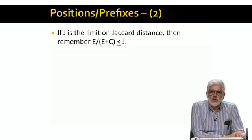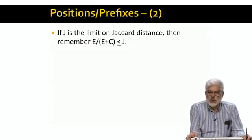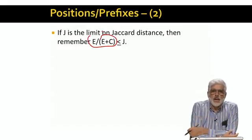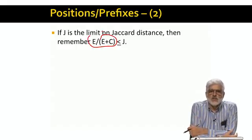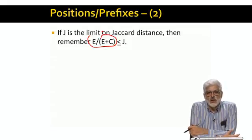Remember, we observed earlier that the Jaccard distance of two strings can be expressed as E over E plus C, where E is the edit distance and C is the length of the LCS. So if J is the upper limit on Jaccard distance, we have E over E plus C is less than or equal to J.